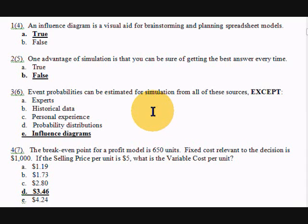Question number three, again number six on the other test forms, event probabilities can be estimated for simulation from all of these sources except influence diagrams. Influence diagram is a planning tool, but you're going to go to one of these other sources, ask experts, use history, use your own experience, or use probability distributions to get the probabilities that will be used in a simulation. An influence diagram helps you understand the situation and determine where you would even put in the probabilities.